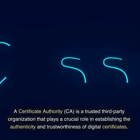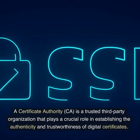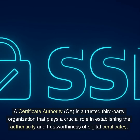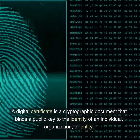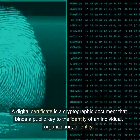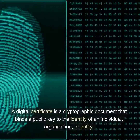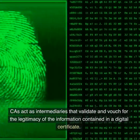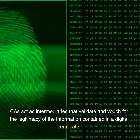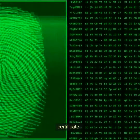A Certificate Authority, or CA, is a trusted third-party organization that plays a crucial role in establishing the authenticity and trustworthiness of digital certificates. A digital certificate is a cryptographic document that binds a public key to the identity of an individual, organization, or entity. CAs act as intermediaries that validate and vouch for the legitimacy of the information contained in a digital certificate.